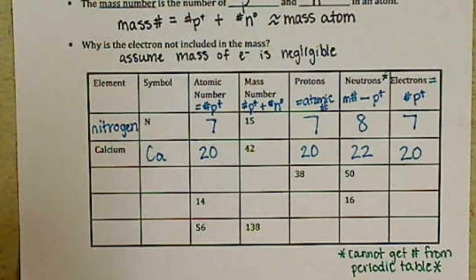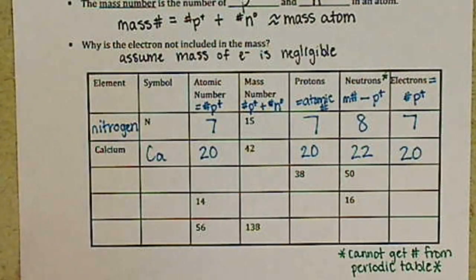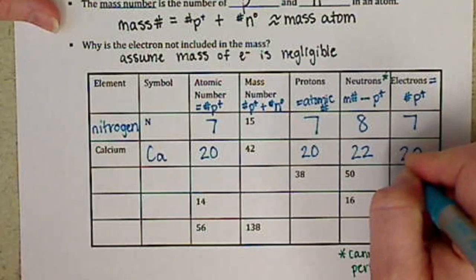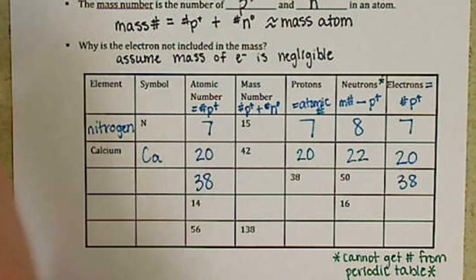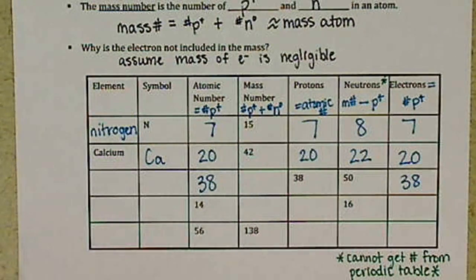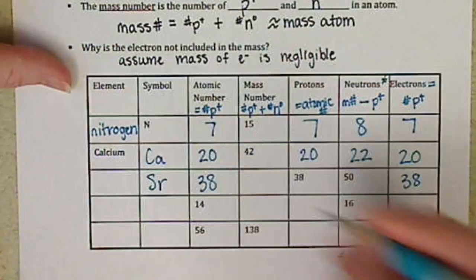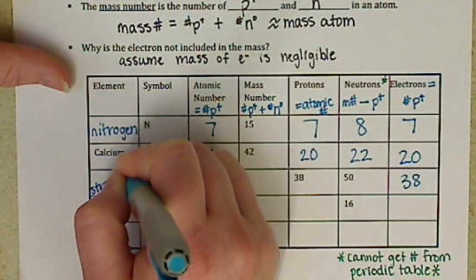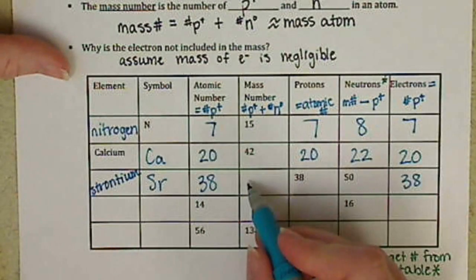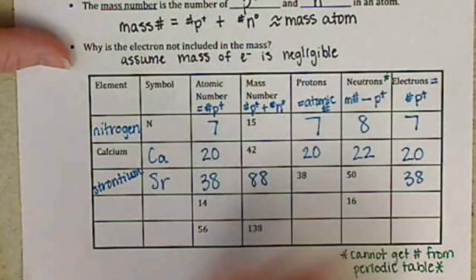For our next row here, we have protons of 38. So we know that our electrons are 38 and our atomic number is 38. So we look to the periodic table for our atomic number of 38, and that is strontium, which has a symbol of Sr. And our mass number is going to be our number of protons plus our neutrons for 88.